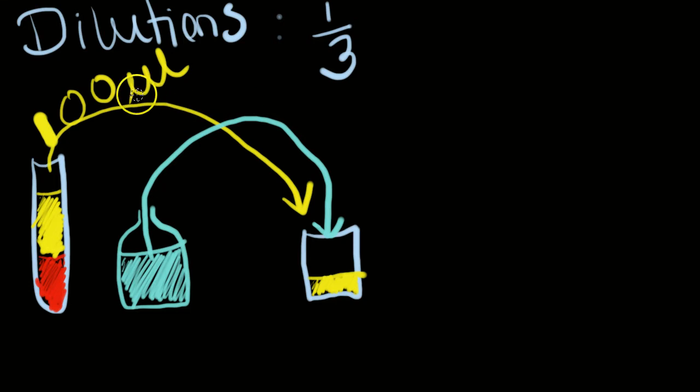So if one part sample is 100 microliters, then two parts diluent is 200 microliters. We're going to put 200 microliters in here of your diluent.